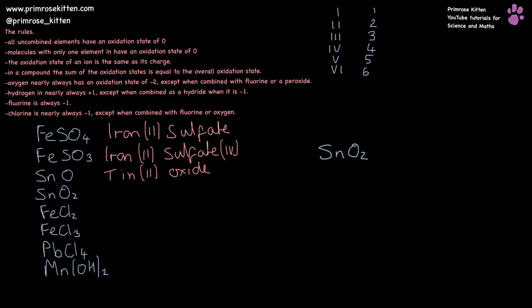Another tin oxide now. Here we have oxygen that is minus two and there are two of them, giving us overall minus four, which means tin must be contributing plus four, making SnO2 tin(IV) oxide.